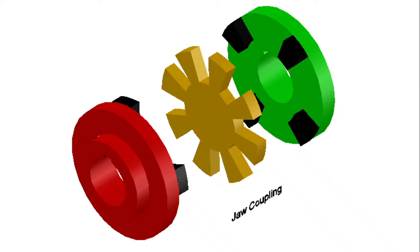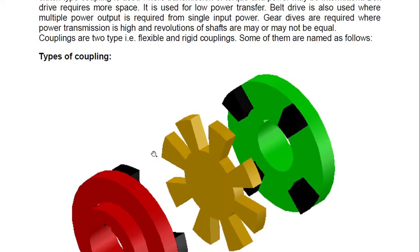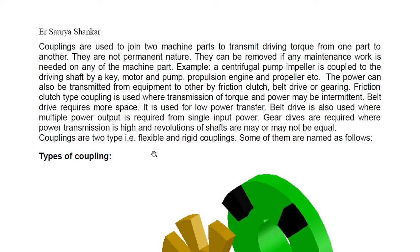Today we are going to discuss a very important topic studied in engineering — coupling. We are going to discuss everything: its types with diagrams, that is flexible coupling and rigid coupling, their subtypes, as well as their advantages and disadvantages. Couplings are used to join two machine parts to transmit a driving torque from one part to another. They are not permanent in nature and can be removed if any maintenance work is needed.